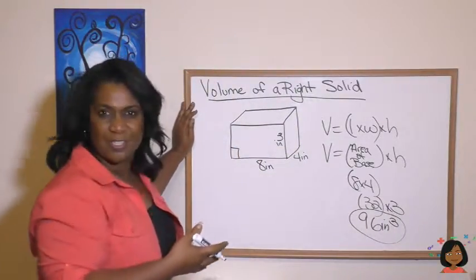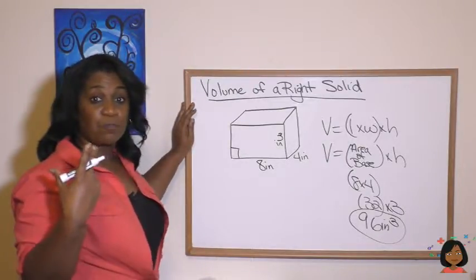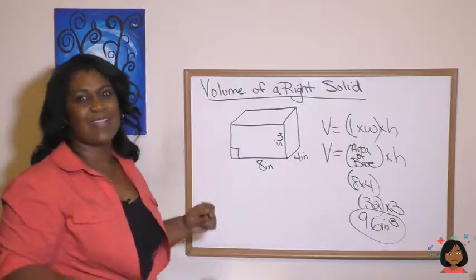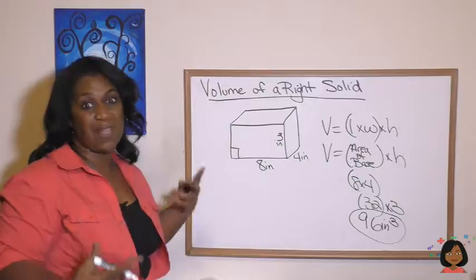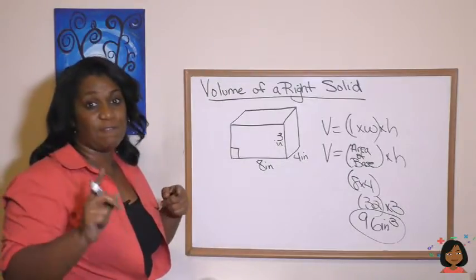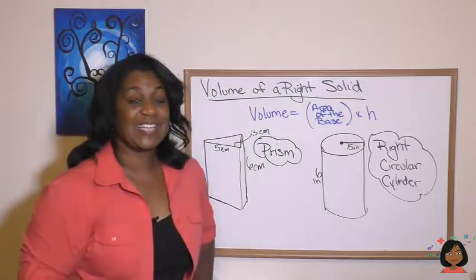Now the good news is you knew how to do that already. But what if our right solid wasn't a rectangle? What if it was a triangle or a square? Could we still apply this to figuring out the volume of those figures? Take a look at these examples.